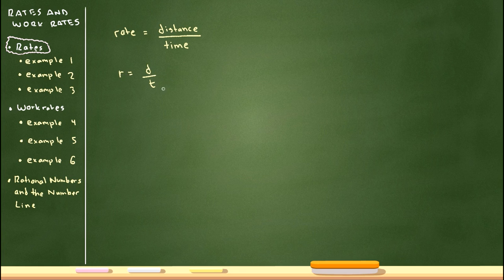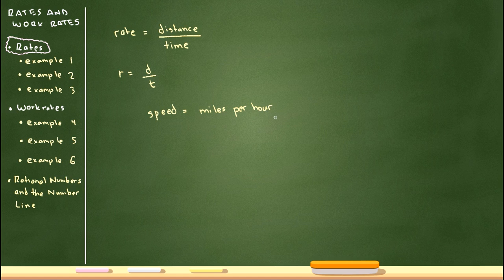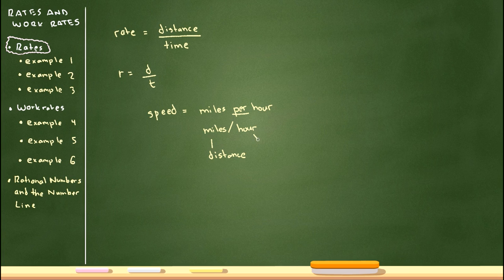It's good to memorize this formula: r = d/t. If you have trouble remembering where r, d, and t go, think about your speed while driving. The speed of your car is measured in miles per hour. The word 'per' translates to division, so miles per hour means miles over hours. Miles is a distance and hours is a time, so rate is distance over time.